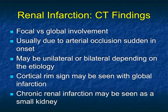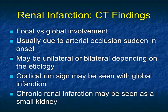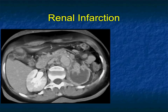We started discussing renal infarction before — renal vein thrombosis and then renal infarct, which can be due to arterial or venous processes. Renal infarct can be focal or global, more commonly focal. It's usually due to arterial occlusion, sudden in onset, and can be unilateral or bilateral depending on the etiology. We talk about a cortical rim sign with global infarction, and chronic renal infarction may be seen simply as a small kidney.